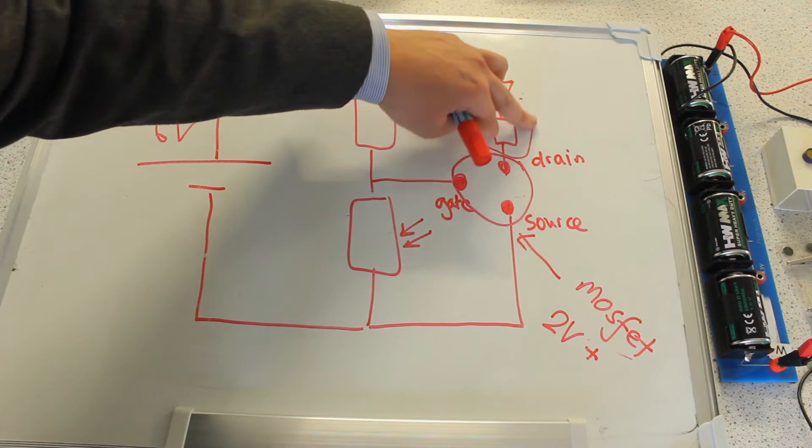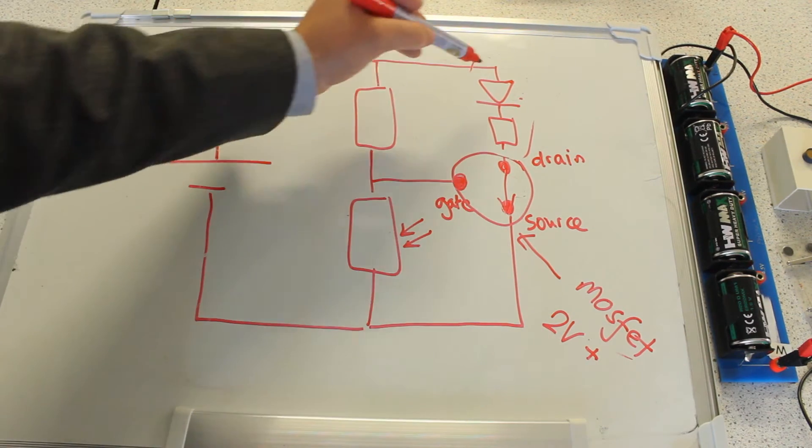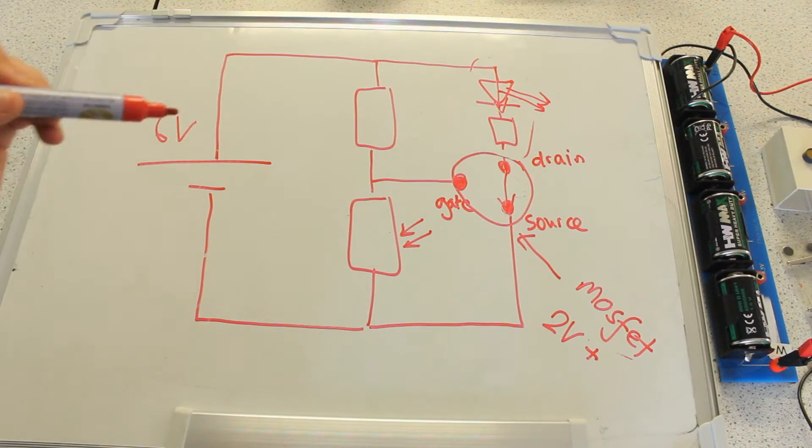When this transistor is activated and current is allowed to flow through here, then current flows through the LED, it emits light and we see it glowing red.